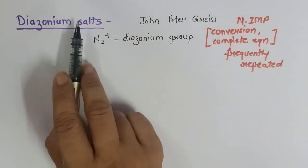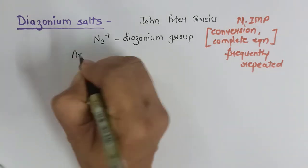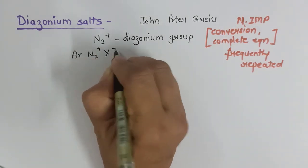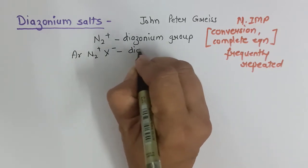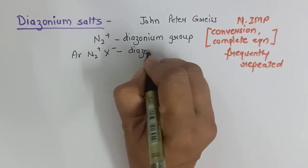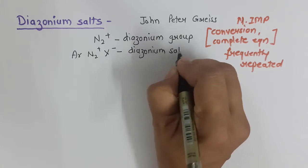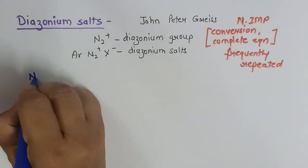When the diazonium group gets attached to a benzene ring along with certain halogen, we call it a diazonium salt. Diazonium salts have a very different nomenclature, so let us study about the nomenclature.